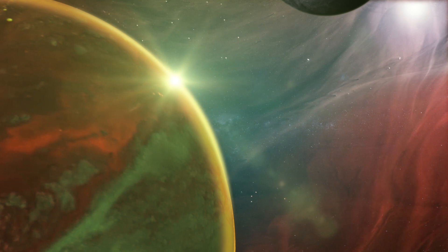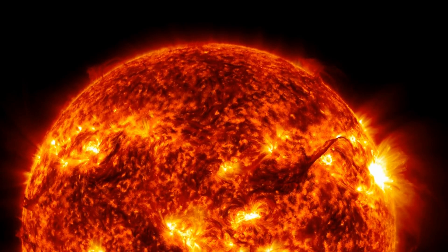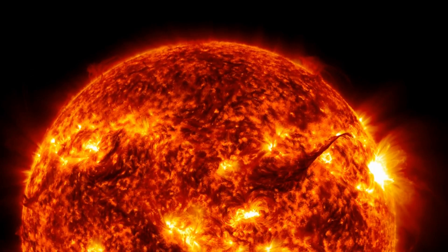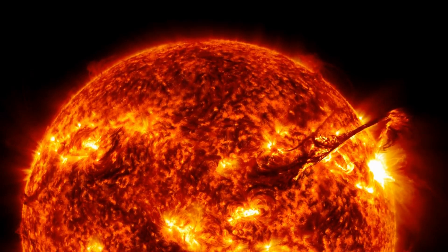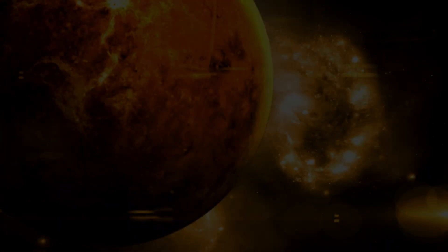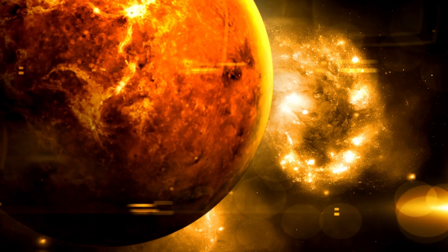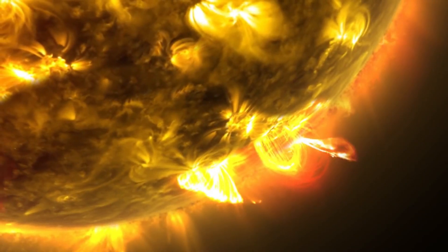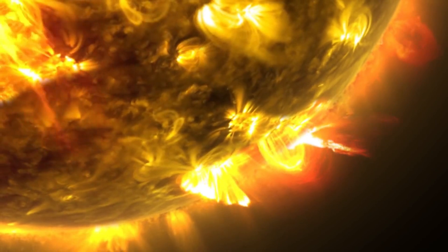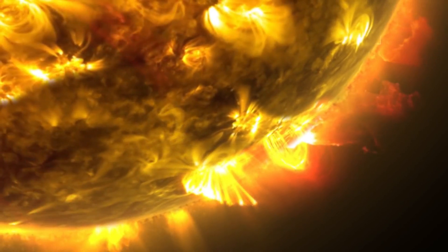This sunspot, designated Active Region 3664, grew at an astonishing rate, swelling to a size 17 times larger than Earth itself. It wasn't long before it began to live up to its name, unleashing powerful solar flares, some so intense they triggered coronal mass ejections (CMEs) aimed straight at Earth.